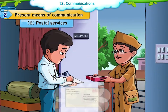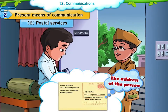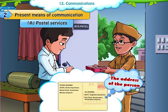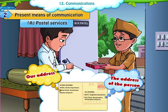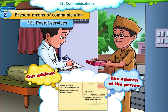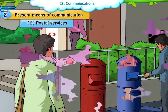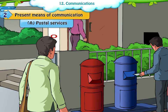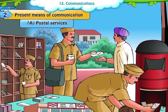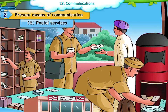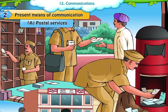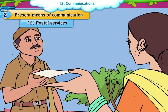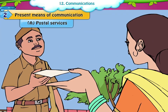We have to write the address of the person to whom we are sending the letter on one side, and on the other side, we need to write our address. Then, the postman collects all the letters and takes them to the post office. Later, he delivers these letters according to the addresses written on them.